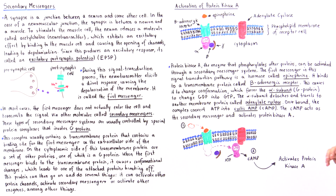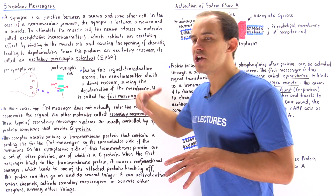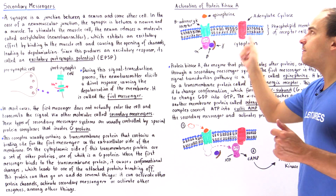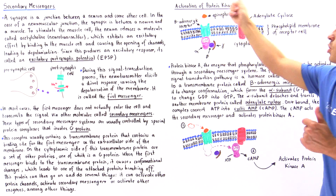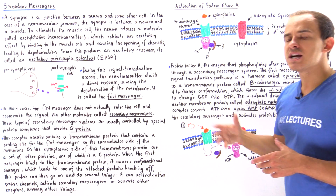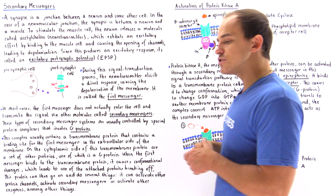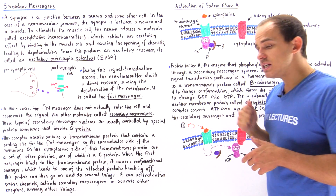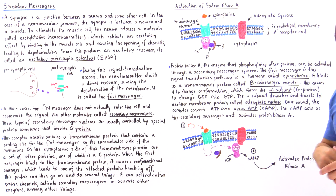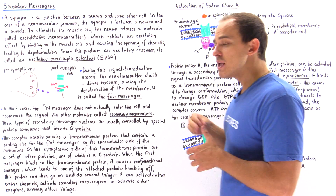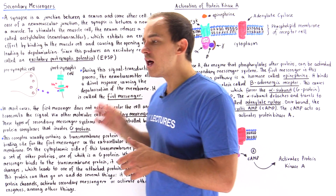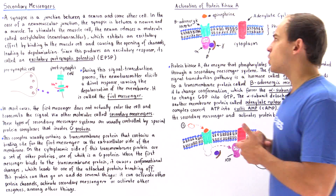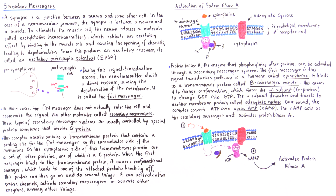Let's look at a specific secondary messenger system that involves the activation of a protein known as protein kinase A. Recall from our discussion of enzymes that protein kinase A is a special type of enzyme that catalyzes the phosphorylation of other proteins in order to activate them.